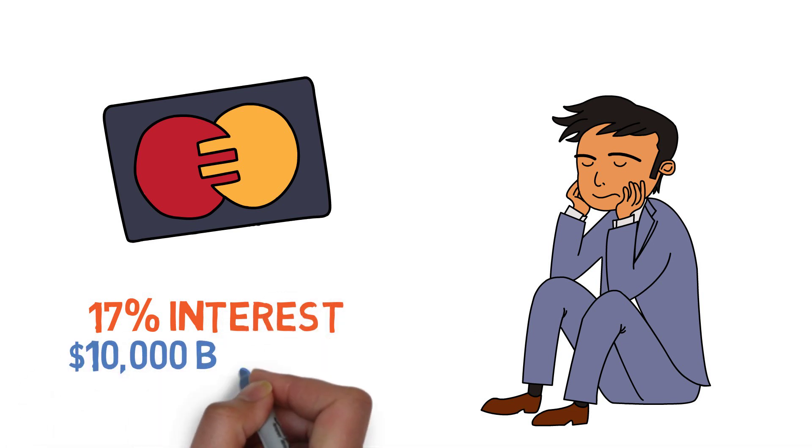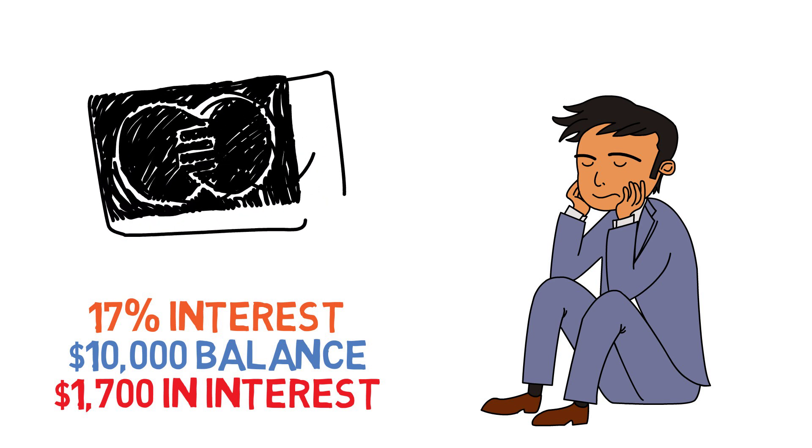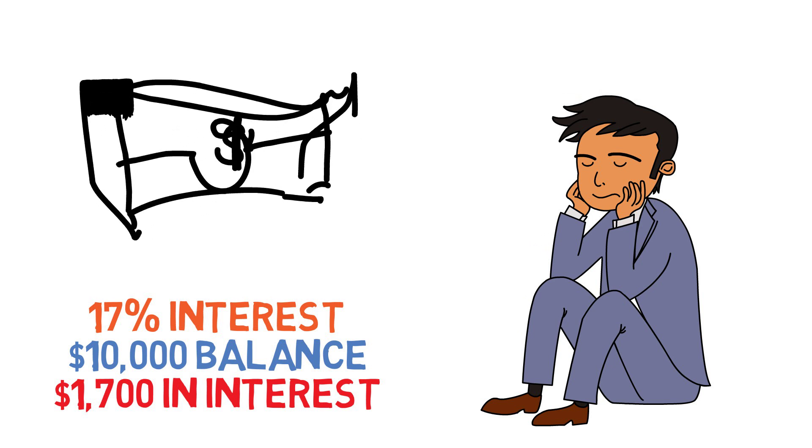This means that if you're carrying a balance of $10,000, over the course of one year you'll have paid $1,700 in interest alone. By paying off debt quickly or avoiding racking up debt entirely, that's less interest paid out and more savings in your pocket.